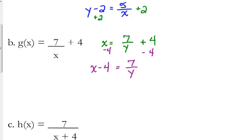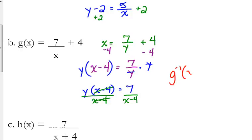That y is in the denominator again, so the only way to get it out is to multiply by it. Make sure you put parentheses around the x minus 4 when you do that. Just like on the last problem, we are not going to multiply it out because we're getting ready to turn back around and divide by the x minus 4. So y is by itself. So g inverse of x is equal to 7 over x minus 4.